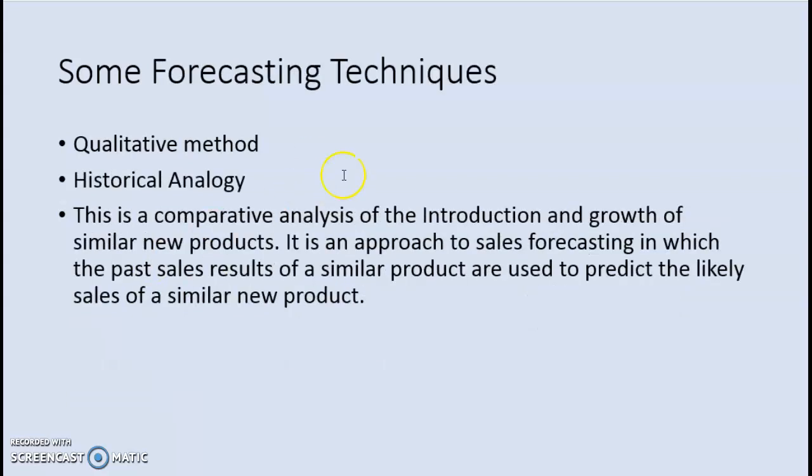Another qualitative method is historical analogy. So what is this? In this, we try to predict the sales or the data for one product based on the sales of a similar product in the past. Again, a very simple method if you look at it.